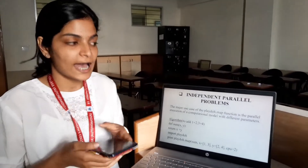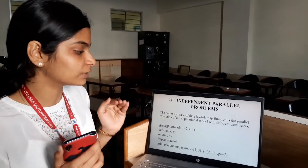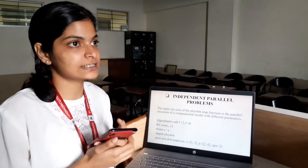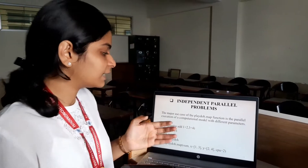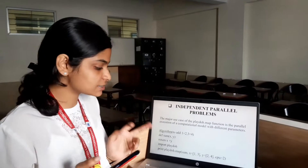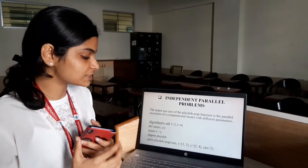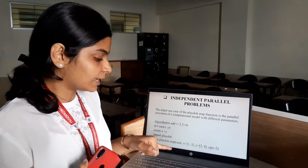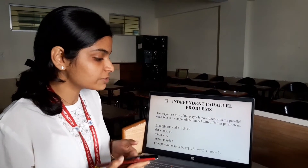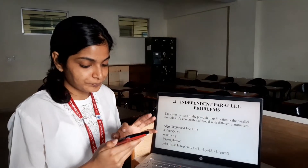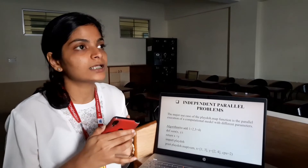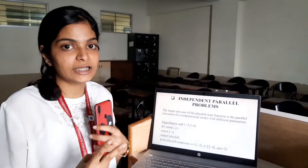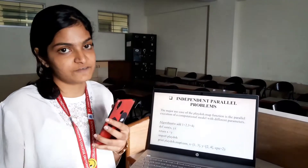Another important feature that Play-Doh has is independent parallel problems. The main use of the Play-Doh map function is a parallel execution of the computation model with different parameters. For example, if we are adding two numbers — 1+2 and 3+1 — we define a function sum(x, y) returning the sum, then call playdoh.map(sum) passing x values of 1 and 3, and y values of 2 and 4, computed with two CPUs. This is one of the main uses of Play-Doh: distributing the job to different CPUs to increase the efficiency of the program.